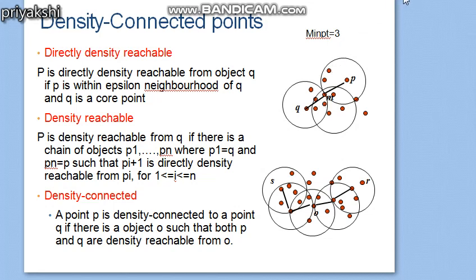The next concept is density reachable. According to the definition, p is density reachable from q if there is a chain of objects p1 up to pn, where p1 equals q and pn equals p, such that p(i+1) is directly density reachable from p(i), for all values of i from 1 to n. We can say that m is directly density reachable from p, because m is within the epsilon neighborhood of p and p is a core point.